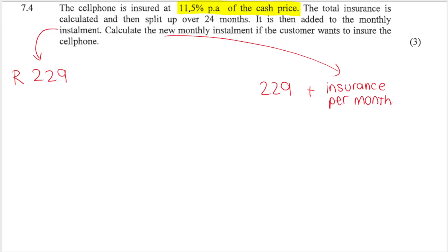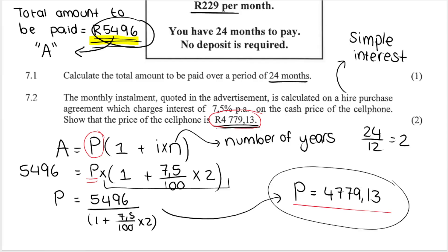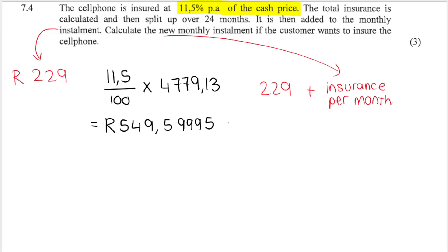They say that the cell phone is insured at 11.5% per annum. So, basically, we got 11.5% of the cash price. Remember, the cash price was this amount over here. Or they gave it to us in the question. This is the amount of insurance per annum or per year. But remember, we are not working with years. We are working with monthly installments. So, what we do is we take the total amount of insurance that we'll be paying in one year. And how do I know that it's in one year? Because PA means per annum, per one year. And we divide it by 12. Why are we dividing by 12? Because there's 12 months in one year. And that is the amount of insurance that needs to be paid every single month.